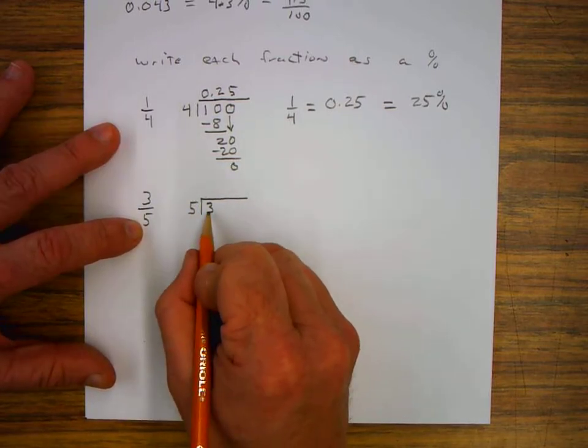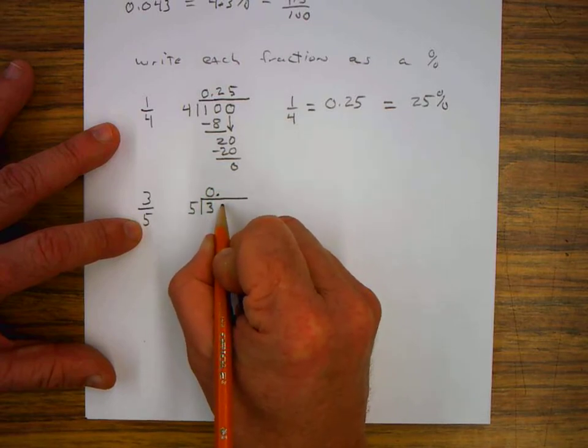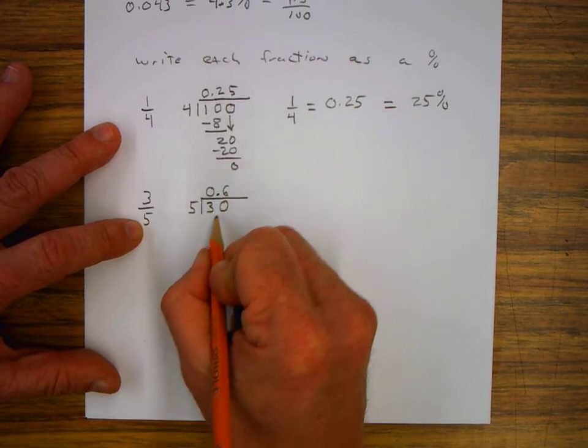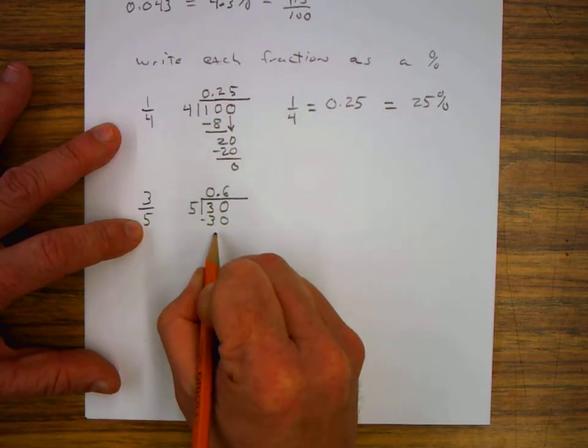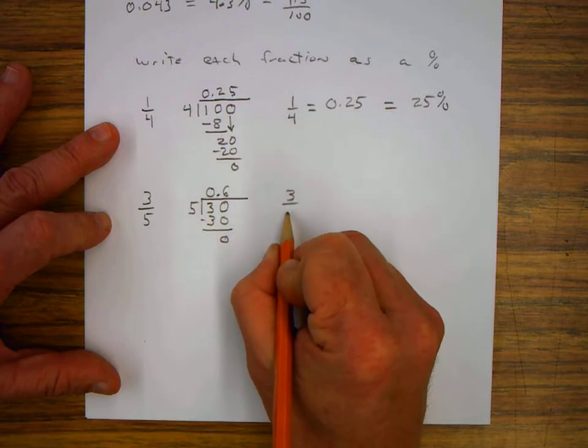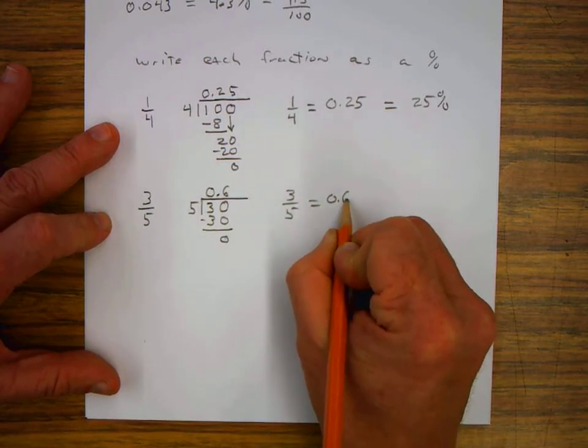5 does not go into 3, so I put in 0. Add a decimal. Add a 0. 6 times 5 is 30. I subtract. I have 0 remaining.